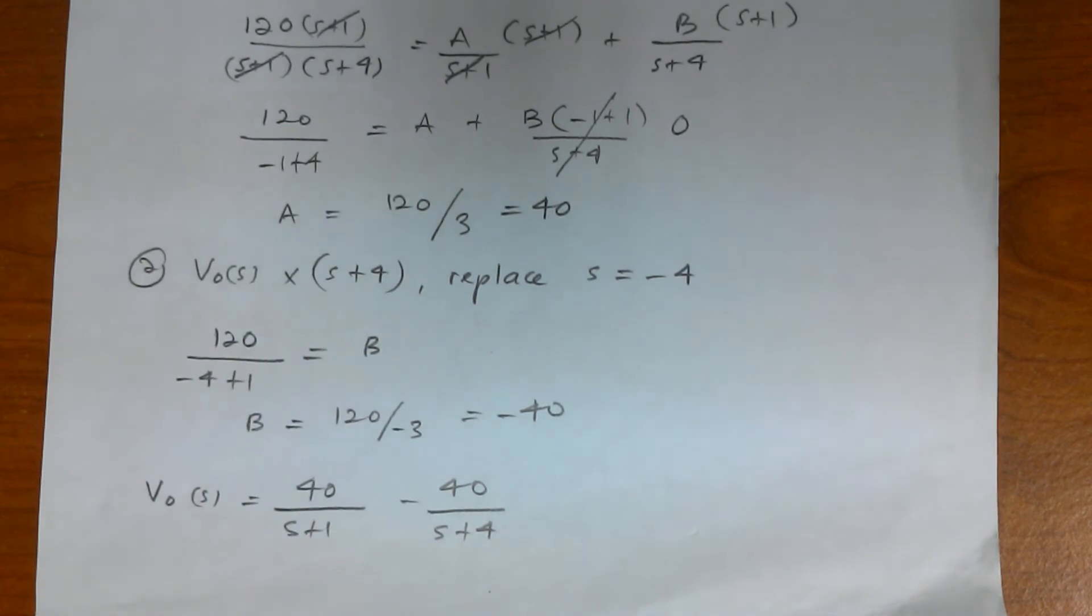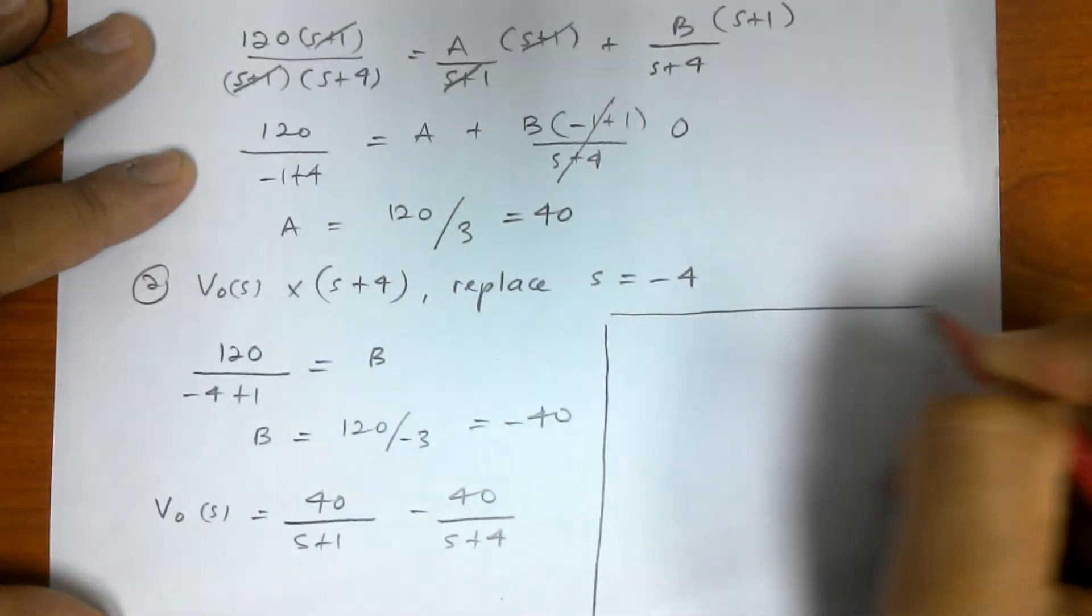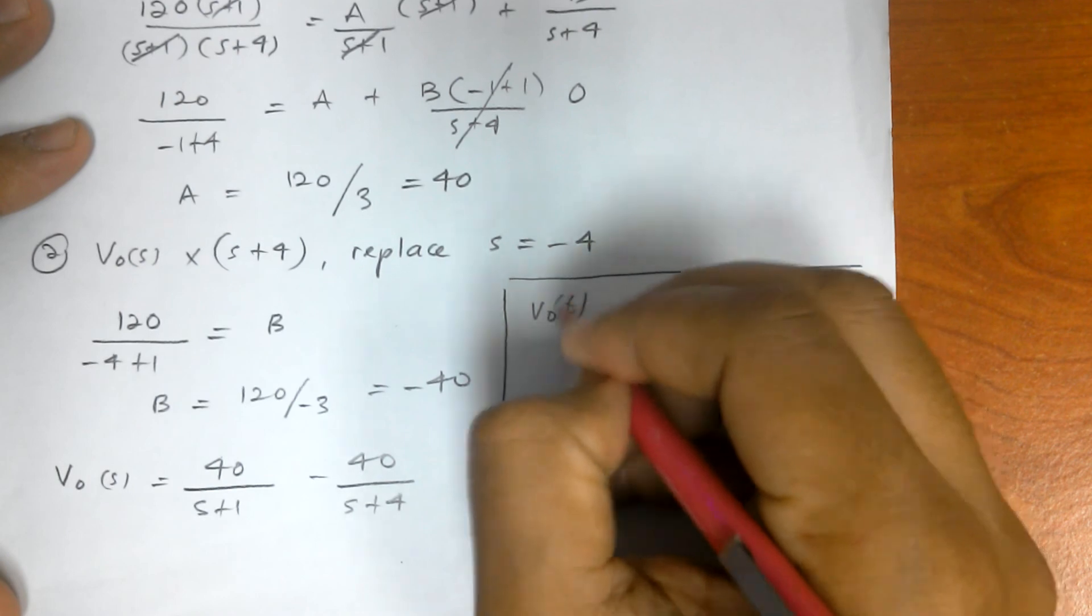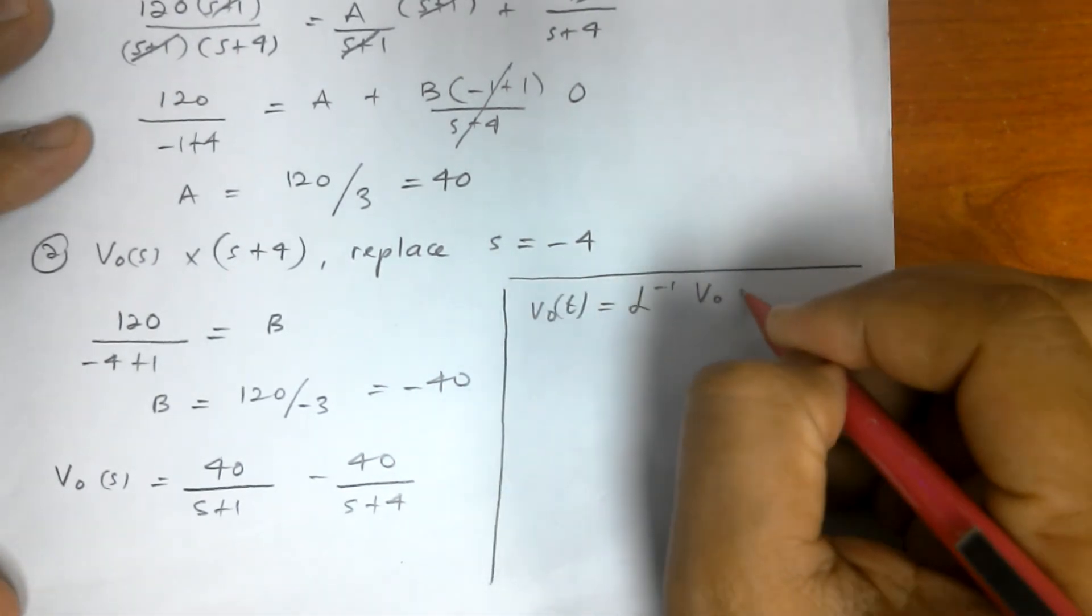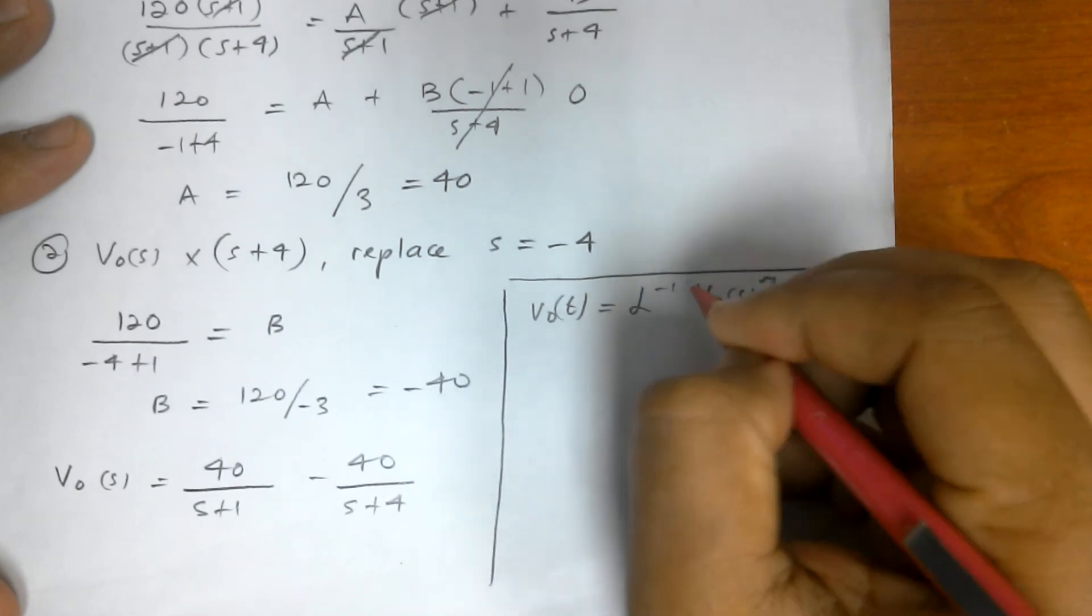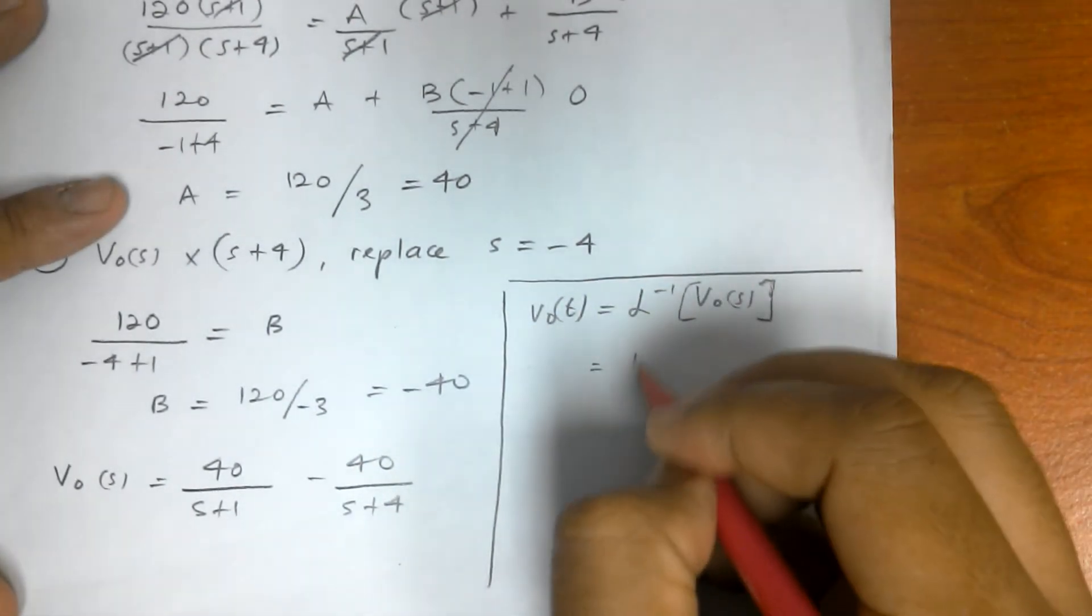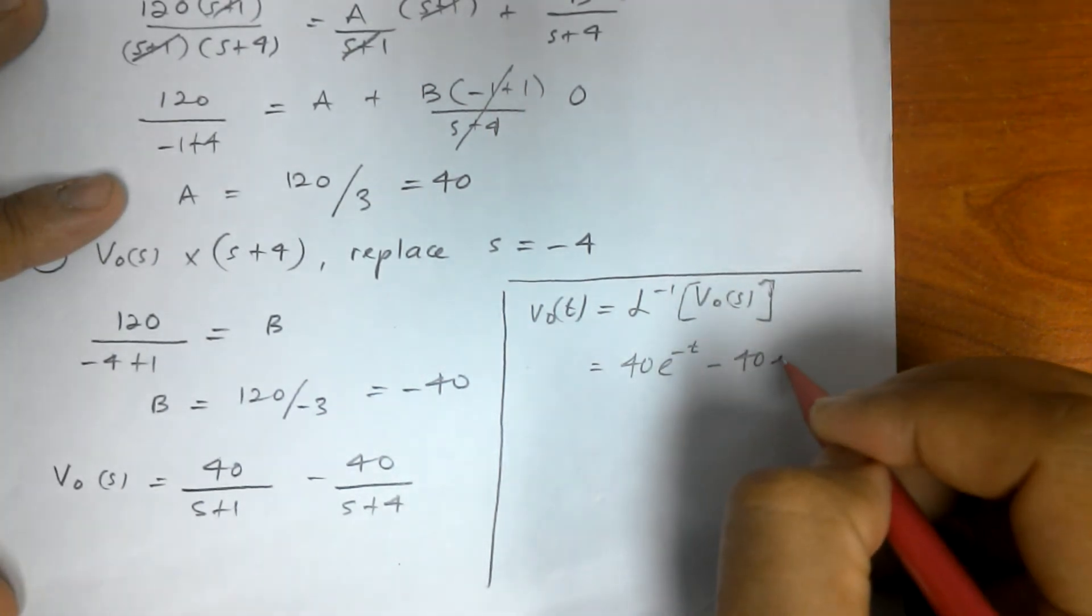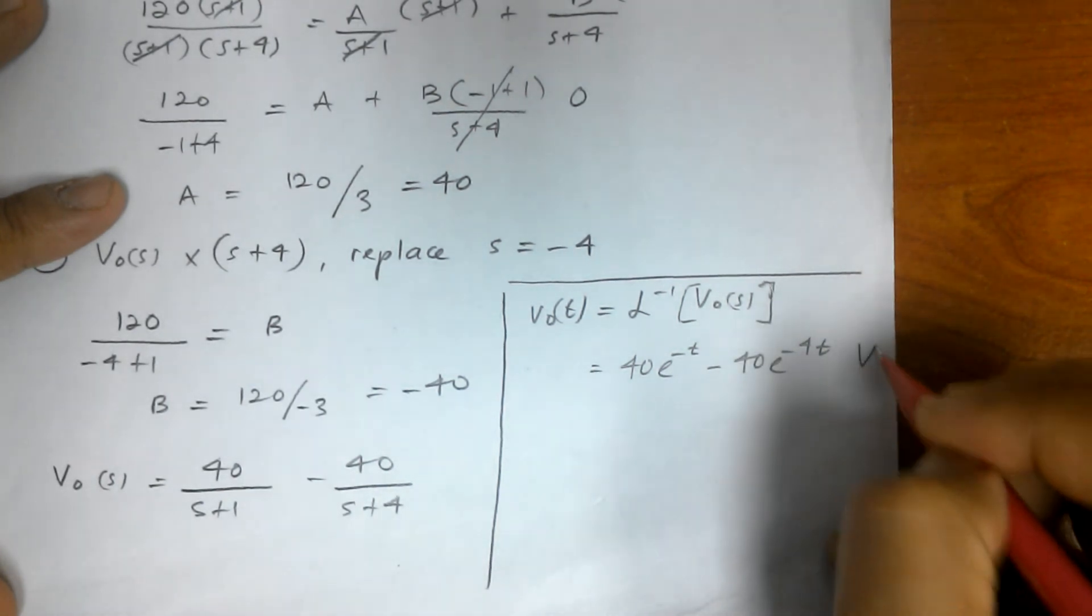Now once we have arrived to this term, we can actually refer to the Laplace transformation table. V out T equals inverse Laplace of V out S. So here we get 40e to the negative T minus 40e to the negative 4T volts. That's the answer.